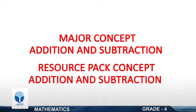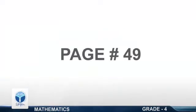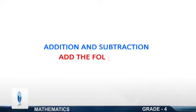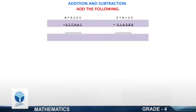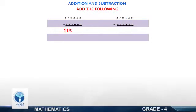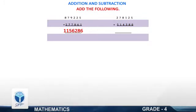Addition and Expression of Whole Numbers, Page 49. Addition and Subtraction. Add the following: 879,225 plus 277,061. Yes, your answer is 1,156,286. Next: 278,125 plus 514,380. Yes, your answer is 792,505.